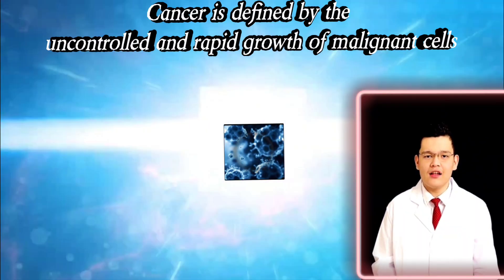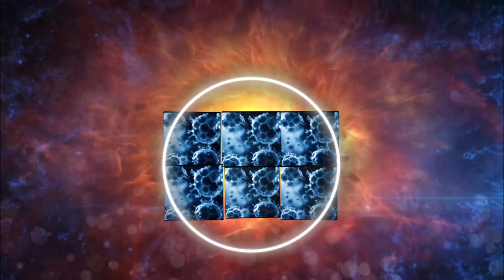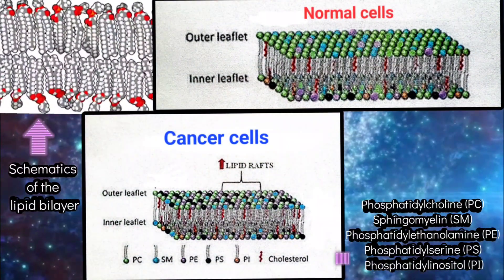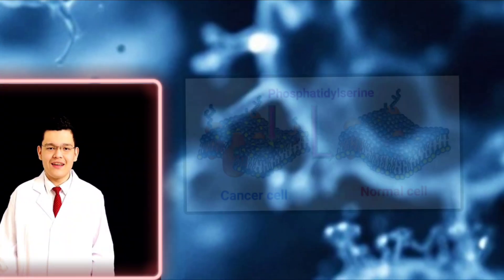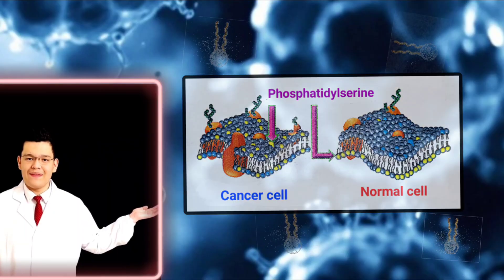Cancer is defined by the uncontrolled and rapid growth of malignant cells. Each time a cell divides, it must replicate its cell membrane, which requires a significant amount of lipids. While cancer cells can synthesize lipids on their own, it is easier for them to obtain lipids from their environment.